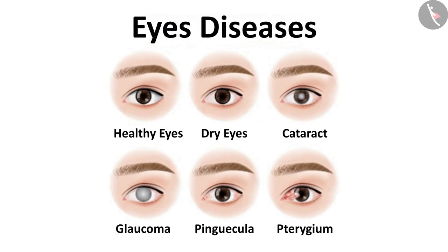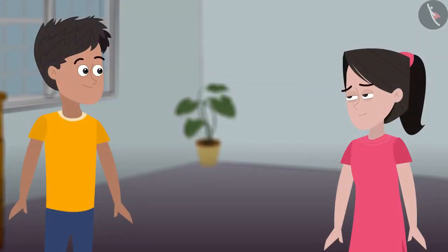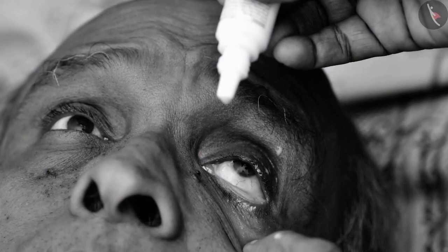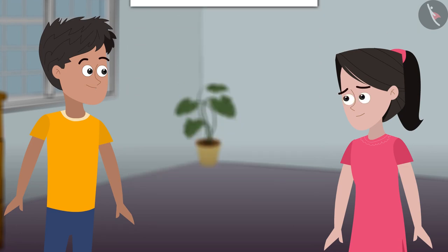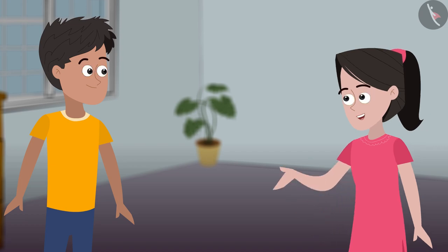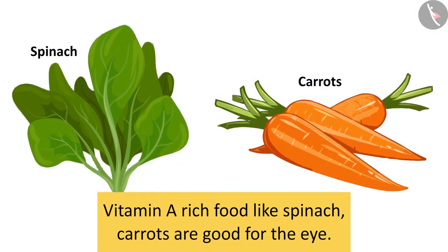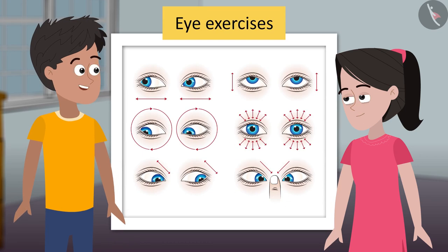Sanya, do you know that there are many kinds of eye disease that can happen to anyone? One of them is cataract — the eye lens becomes cloudy. Thankfully this is treatable in modern times; the opaque lens is removed and a new artificial lens is inserted. Our teacher was saying that if we eat a proper diet like vegetables and fruits, specially vitamin A rich food like spinach and carrots, then our eyesight can remain better. Direct sunlight is also bad for the eye. The yoga teacher in our school has taught some good eye exercises — these help keep the eye muscles strong and healthy.